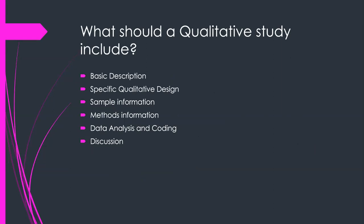When we look at what should be included in a qualitative study, it's quite similar to what we would look at for a quantitative study. We're going to look at a basic description of the study and the research question, the qualitative design used to collect the information, information on the sample and methods, how the data was analyzed and coded, and lastly a thorough discussion on the results.